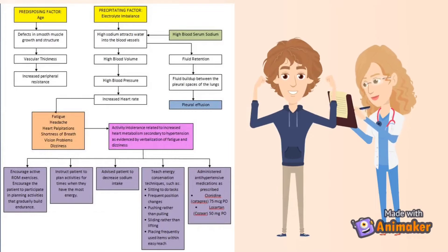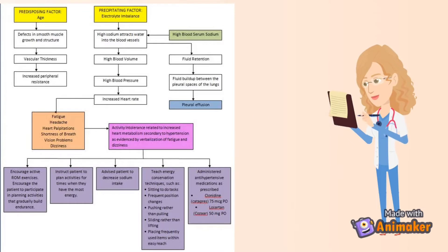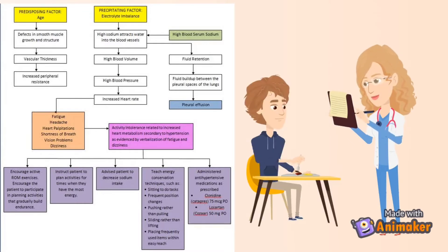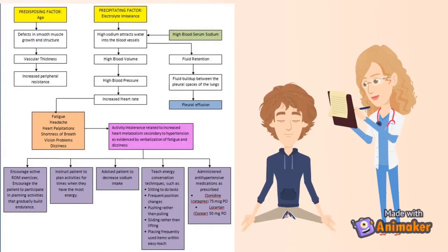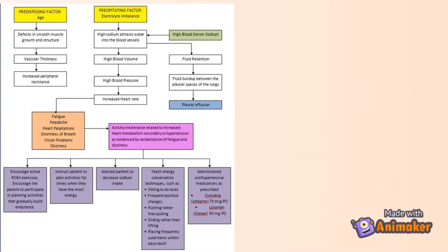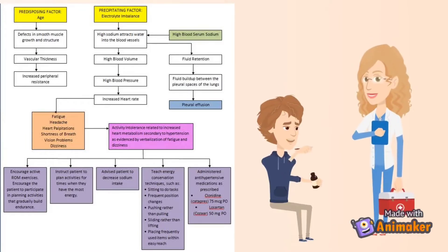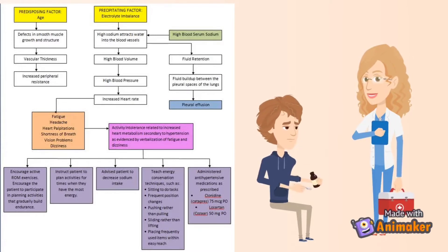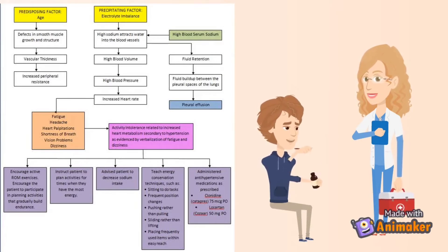Instruct the patient to plan activities for times when they have the most energy. Advise the patient to decrease sodium intake. Teach energy conservation techniques such as sitting to do tasks, frequent position changes, pushing rather than pulling, sliding rather than lifting, or placing frequently used items within reach. Administer anti-hypertensive medications as prescribed, such as clonidine (Catapres) at 75 micrograms per arm, and losartan (Cozaar) 50 milligrams per arm.